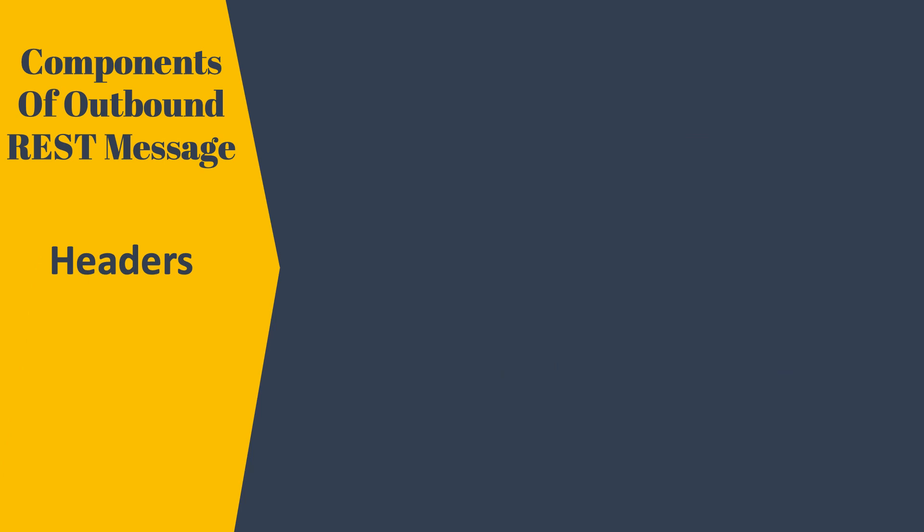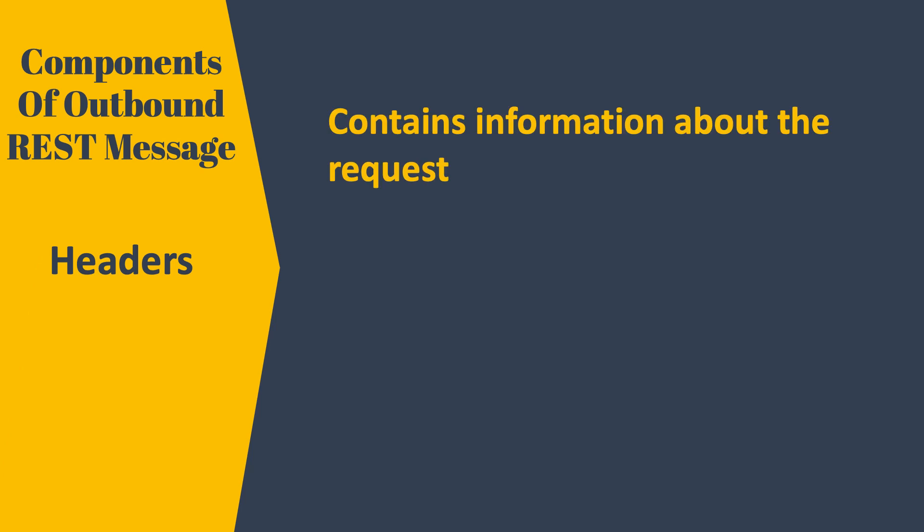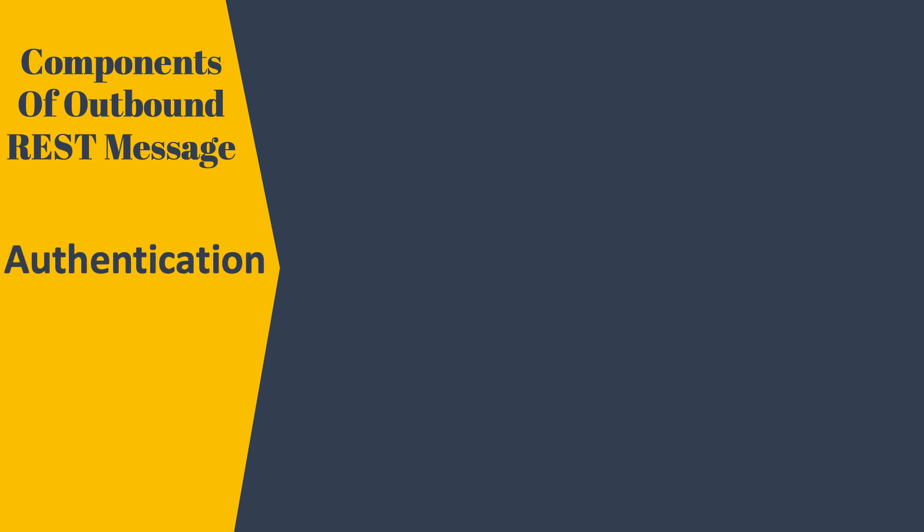The next component is headers, which basically contains information about the request, such as the desired response format. When you send a REST API call to a third-party system from ServiceNow, you can specify the headers — for example, you can specify that you want the response from that third-party application in a specific format, and you mention that in the headers.